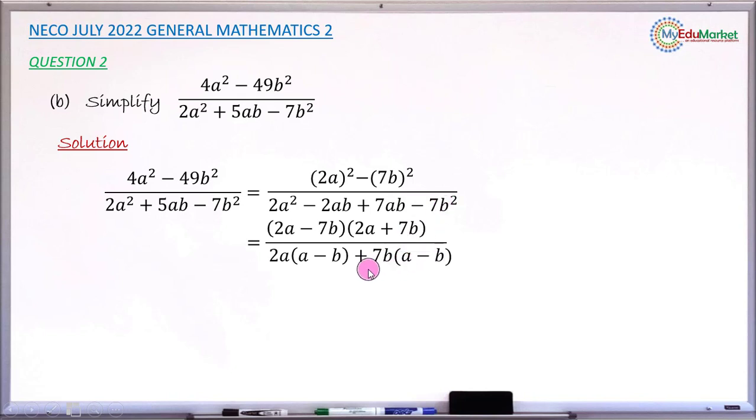So if we continue, the denominator can be factorized further. That gives (a - b), the common bracket there. Then I'll open another one. Then I'll copy what I have outside the two brackets, which is 2a + 7b. I just copied my numerator.